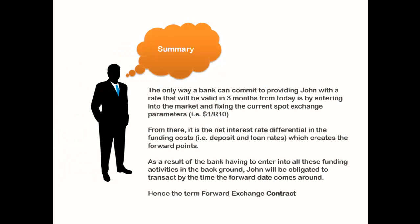A forward exchange contract is nothing other than today's spot rate adjusted for time. The only way the bank could commit to providing John with a rate in three months was to do these money market transactions. Now it makes sense why it is called a forward exchange contract: the bank is 100% reliant on John coming in three months and physically doing the ticket. If John wasn't there, the bank would have done all this money market work and be exposed to risk. This is why John cannot walk away from this trade without economic implications. The bank had to work out the equivalent interest rate differential for three months between the dollar deposit and the rand loan, and charge that to John as the effective cost of adjusting the spot position for time.